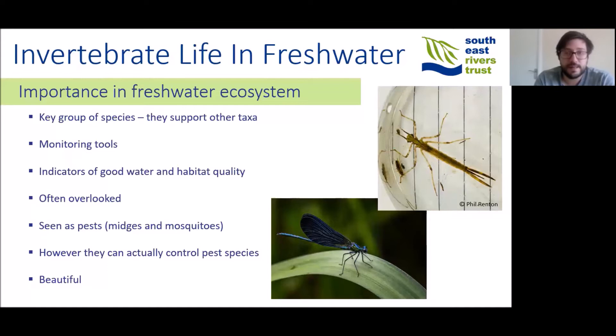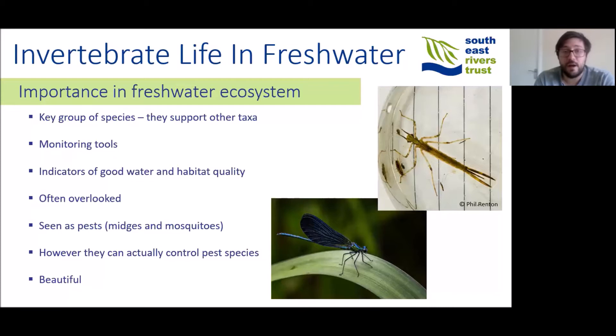There are a large range of invertebrates that have evolved to different niches, so their presence or absence in a certain habitat may indicate that certain microhabitats are missing. Because they have evolved to be more or less resilient to certain changes in water quality, the presence or absence of certain species may indicate a heavily impacted water body. They're often overlooked in policy documents or seen as pest species, especially mosquitoes. However, they can actually be the predators of those pest species. And if you see a beautiful demoiselle flittering over a water body in summer, or look at any invertebrate under a microscope and see the level of complexity, it can be stunning to behold.